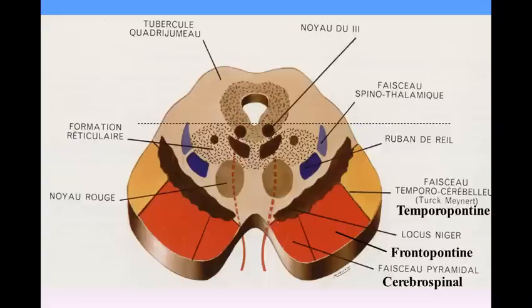The tegmentum is continuous below with the reticular formation of the pons and, like it, consists of longitudinal and transverse fibers together with a considerable amount of gray substance. The principal gray masses of the tegmentum are the red nucleus and the interpeduncular ganglion. Of its fibers, the chief longitudinal tracts are the superior peduncle, the medial longitudinal fasciculus, and the lemniscus.